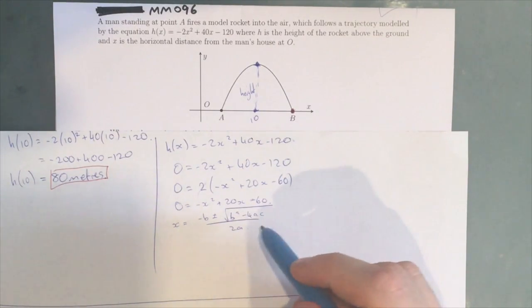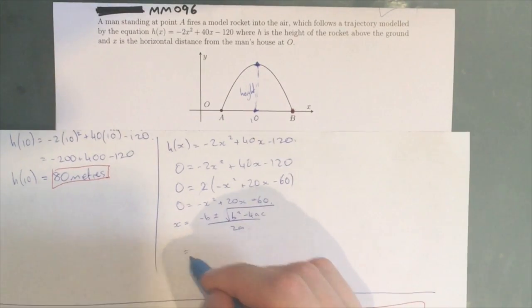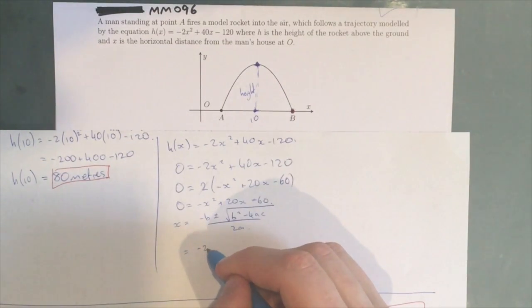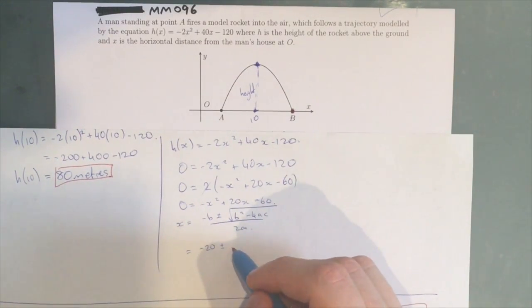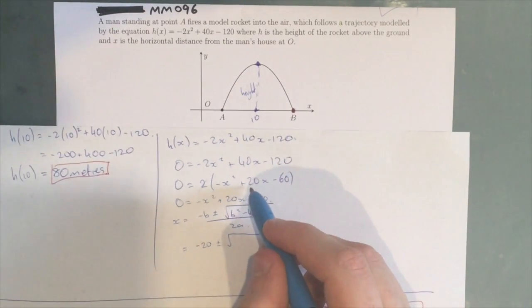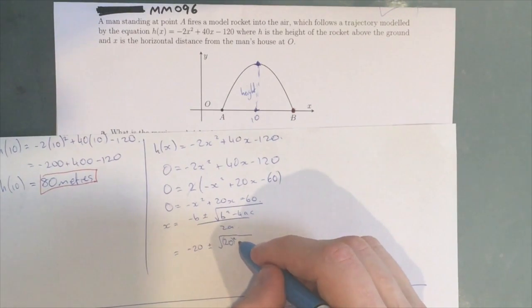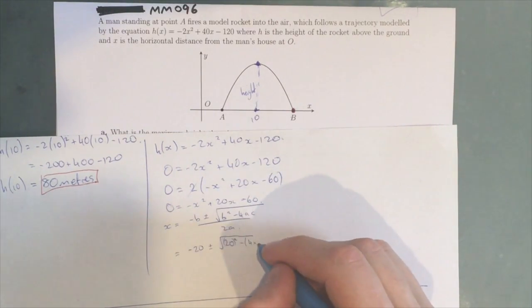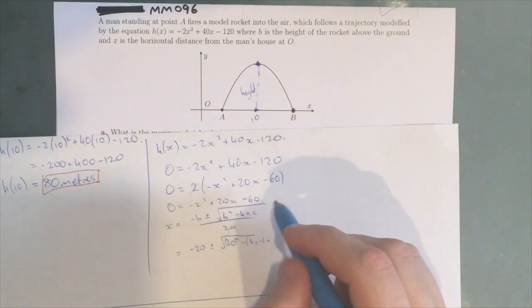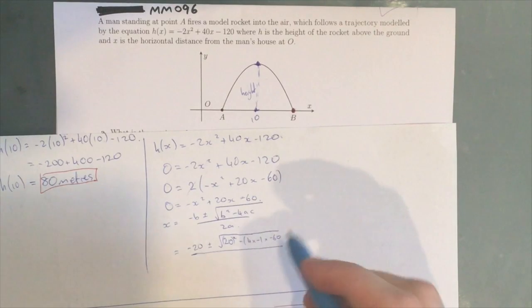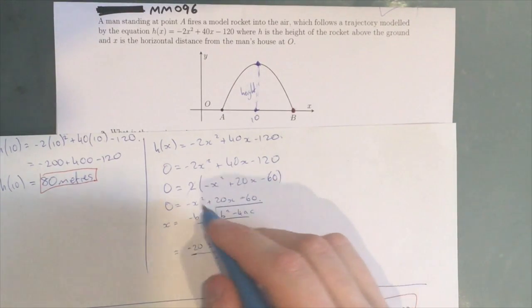So our B value is 20, so -20 ± √(B²), which is 20. So 20² - 4 times A, which is -1, times C, which is -60, over 2 times -1.